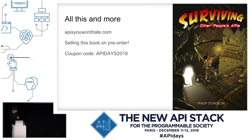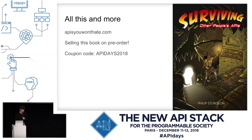All of this content is in a new book I'm working on called 'Surviving Other People's APIs.' It's about interacting with APIs that somebody else — or you in a different life — wrote, as opposed to building APIs. There's a coupon code if you buy it from LeanPub: API Days 2018. I might have a couple of minutes for questions. Thank you.